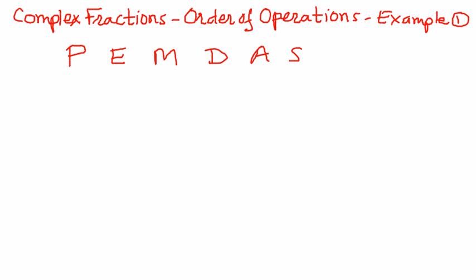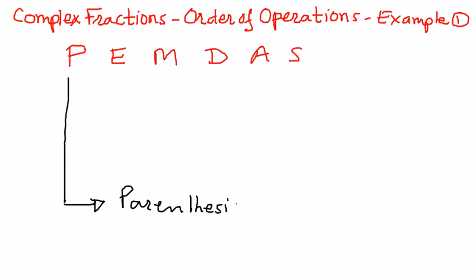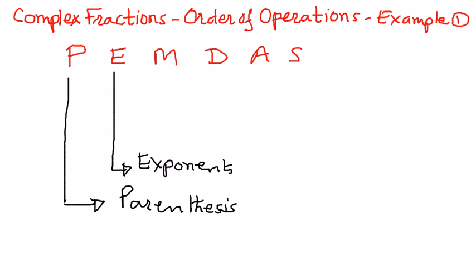What do these things mean? P stands for parenthesis — we're going to work the numbers inside the parenthesis. Then E — we're going to expand the exponents, if we have any exponents of the form x to the power of 2 or 5 to the power of 3, etc.